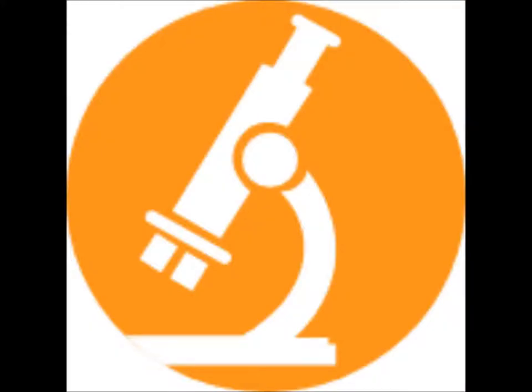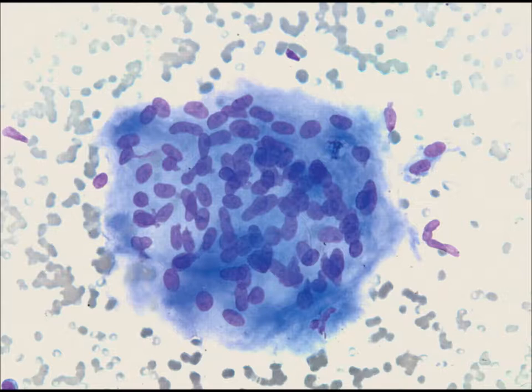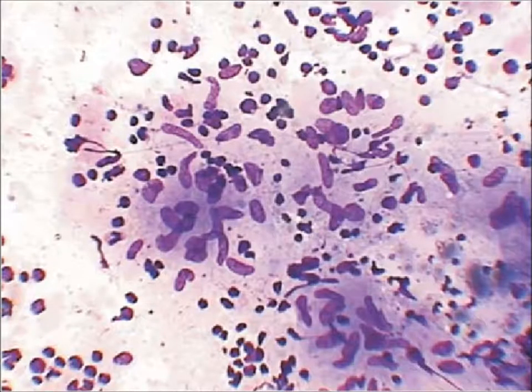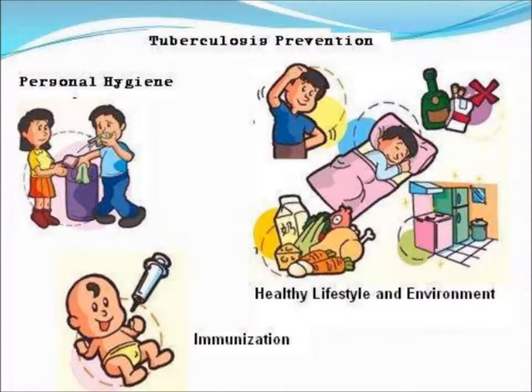Fine needle aspiration cytology of the peripheral lymph nodes shows granulomas. Here you can see clusters of epithelioid cells with cigar-shaped nuclei. Prevention is best: personal hygiene, immunization, and a healthy lifestyle and environment, because the treatment for tuberculosis is costly and the patient has to take different antibiotics for nine months.